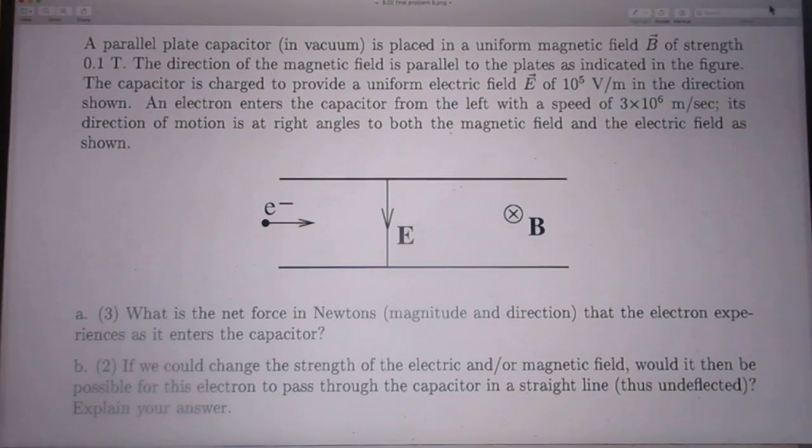That is 1% of the speed of light, by the way. Its direction of motion is at right angles to both the magnetic field and the electric field, as shown.